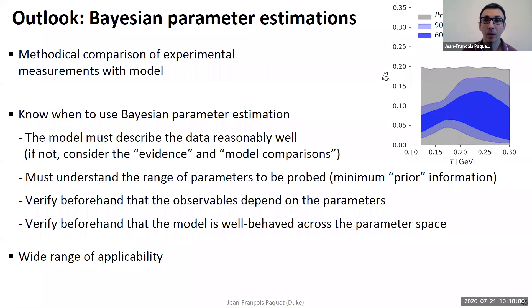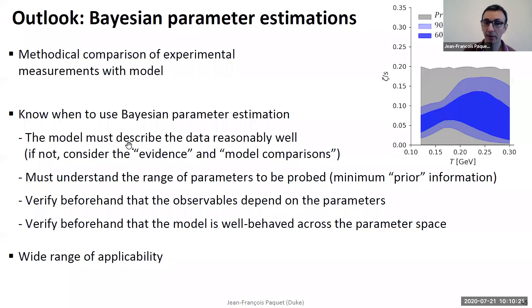Now, it's important to know when to use Bayesian parameter estimation. Here I assumed that our model was in good agreement with data and that we're only interested in constraining the values of a parameter. But you really have to make sure that's the case. If it's not, you probably have to consider a different question, which is: which model best describes the data?